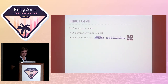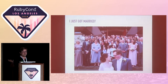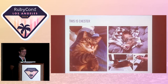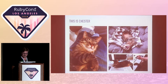A couple of personal things. Those are things I am. These are things I am not. I'm not a mathematician. I'm also not a computer vision expert, and I'm most definitely not an LA Rams fan — Seahawks all the way. I got married this year, that was a lot of fun. That's my wife Kelly. This is my cat Chester. I figured if Gorby Puff Thunder Horse gets to be in slides, Chester should get to be in slides too.